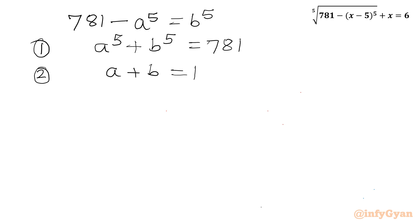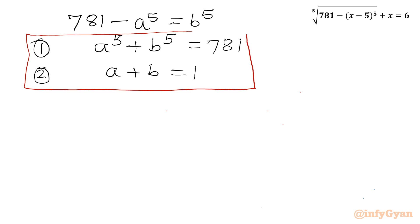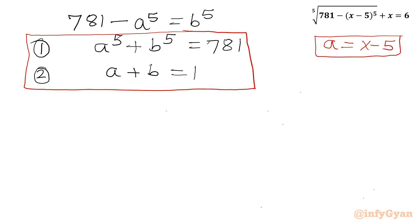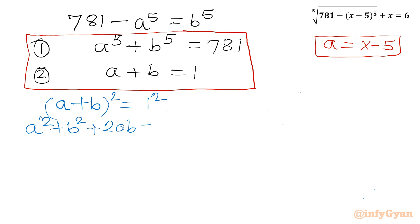So this is our system of equations where we need to calculate the value of A only, since A is our substitution x minus 5. I will now consider the second equation A plus B equals 1, and begin by squaring it: (A plus B)^2 equals 1^2.